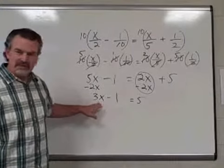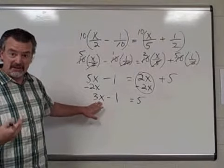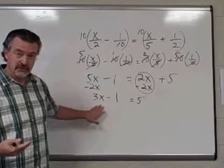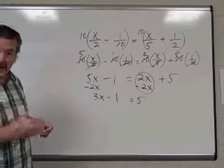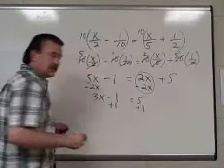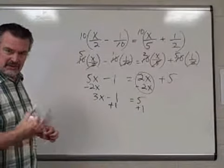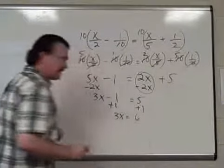Now, the next keyword is isolate. I want to isolate the variable term. It's not isolated, it's not by itself. There's a constant term with it, so I want to get rid of that constant term, which I would do by adding one to make that term disappear into 0. And again, if I add one to one side, I have to add one to the other side of the equation to keep it balanced.